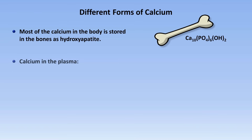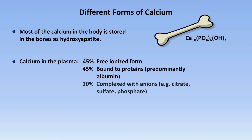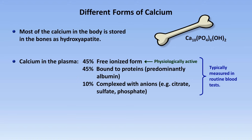The small minority of calcium in the plasma exists in three forms. Approximately 45% is in the free ionized form. Another 45% is bound to proteins, predominantly albumin. The remaining 10% is complexed with circulating anions such as citrate, sulfate, and phosphate. When measuring serum calcium levels, it's important to remember that only the free ionized form is physiologically active, yet routine blood tests measure the total circulating calcium. While it's possible to measure ionized calcium directly, there are technical limitations and samples require special handling, which decreases precision and increases costs as compared to total serum calcium.